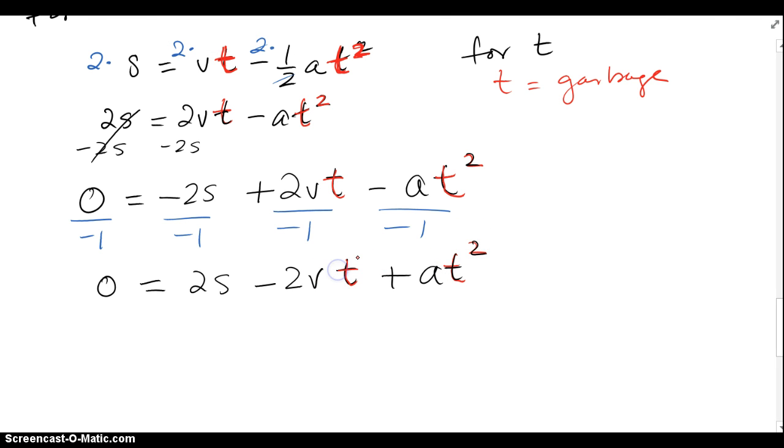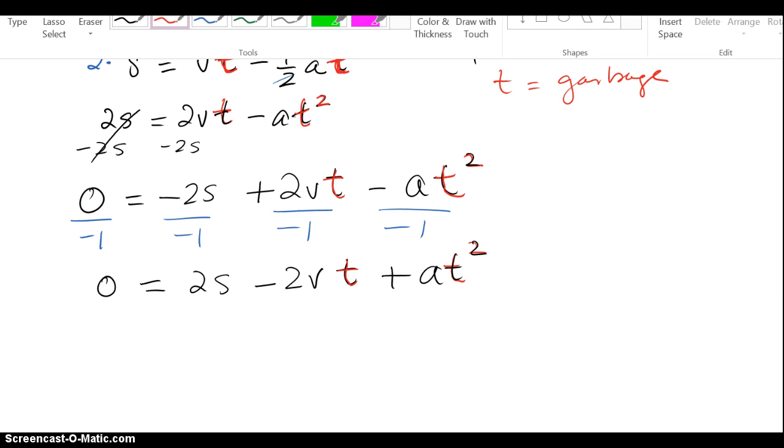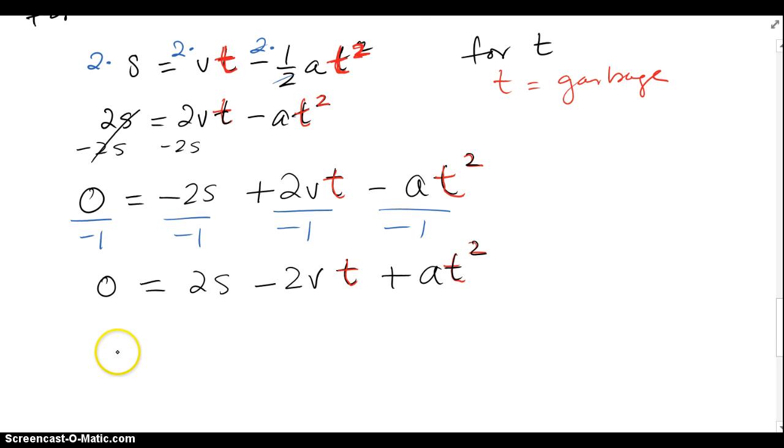So now, I have, I'm going to put it on the other way, a t squared, the way we're used to, minus 2v t, plus the 2s equals the 0 I need.